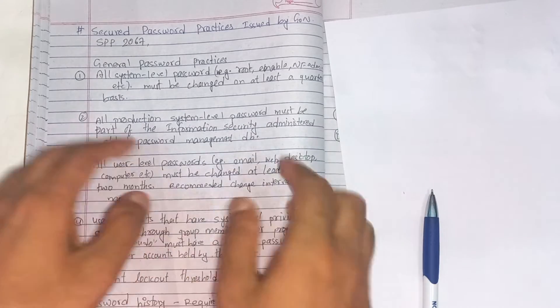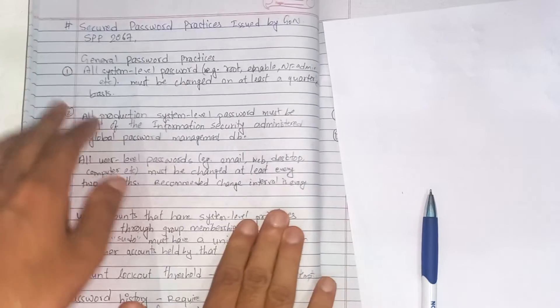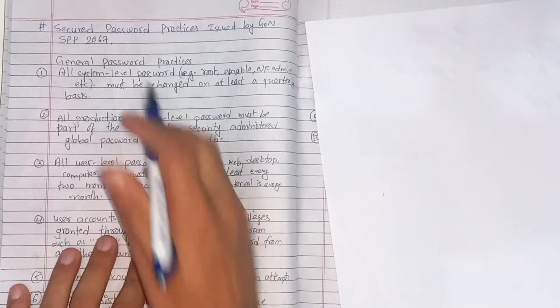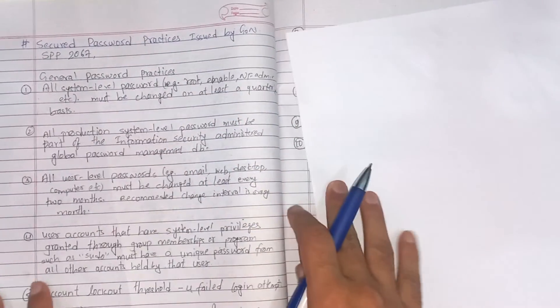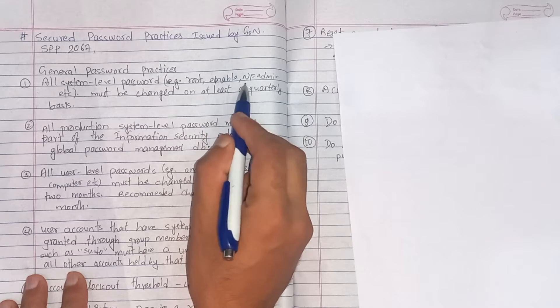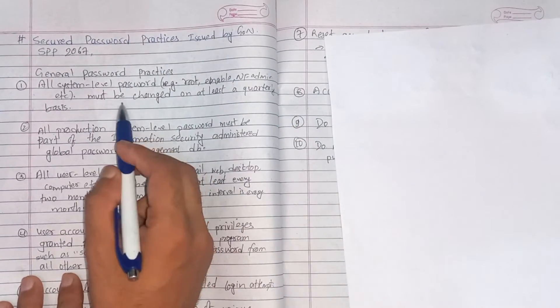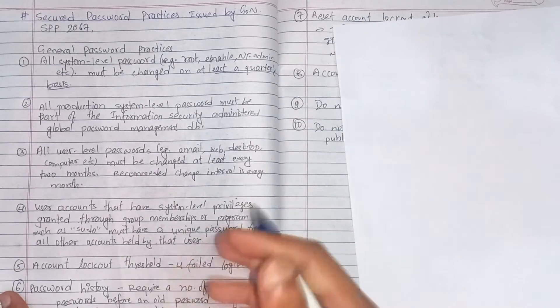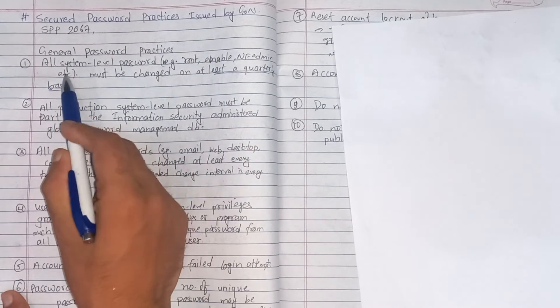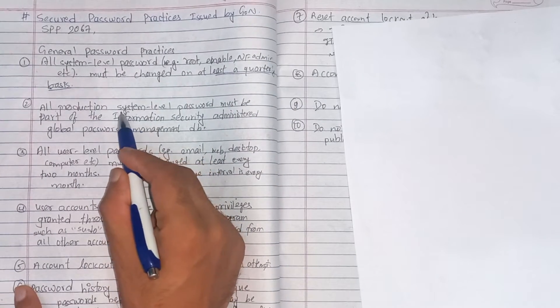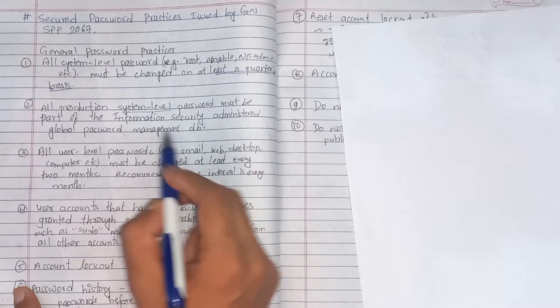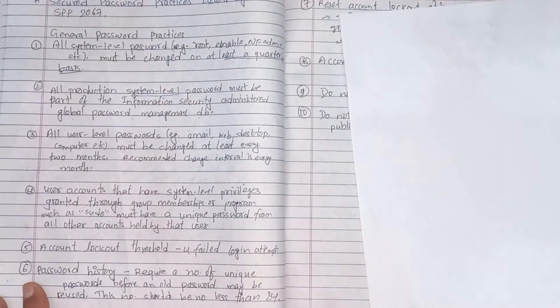So what is the general password practices? All system level passwords, root level, network administration, admin level, all system level are changed at least on a quarterly basis, meaning every 4 months. All production system level passwords must be part of information security administered global password management database.